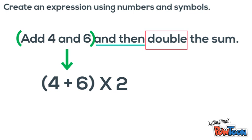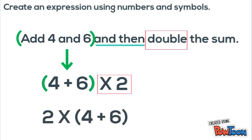So now we have add four plus six and then double the sum as a numerical expression. Now order doesn't matter when we're multiplying so we also could have written two times parentheses four plus six as well. As long as we keep the parentheses around four plus six we're good.